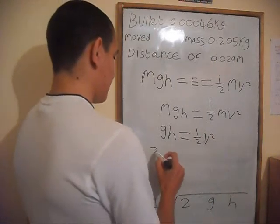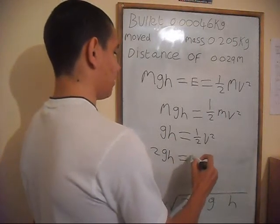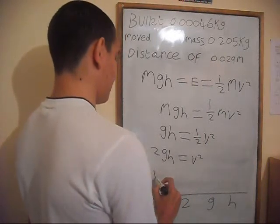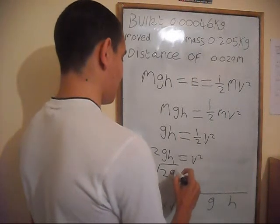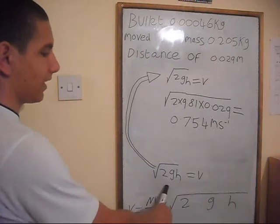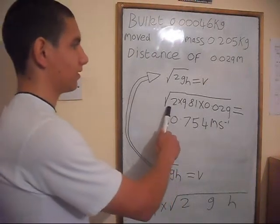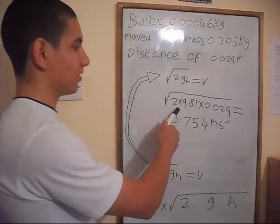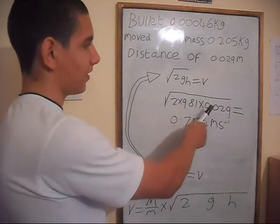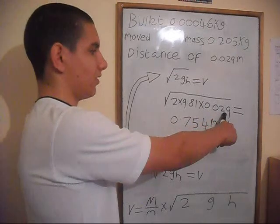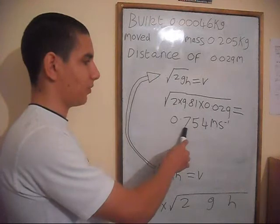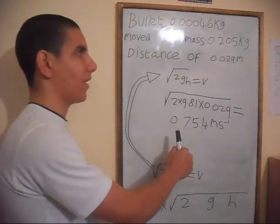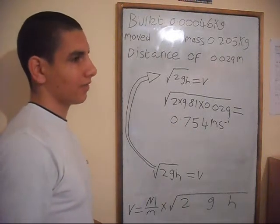We can get rid of M on either side to get GH equals half v squared. Then we times both sides by 2 to get 2GH equals v squared. We take the square root of each side, which gives √(2GH) equals v. Substituting values — 2 times 9.81 times 0.029 metres — gives a velocity of 0.754 metres per second, which is the velocity of the mass moved when the bullet hit it.